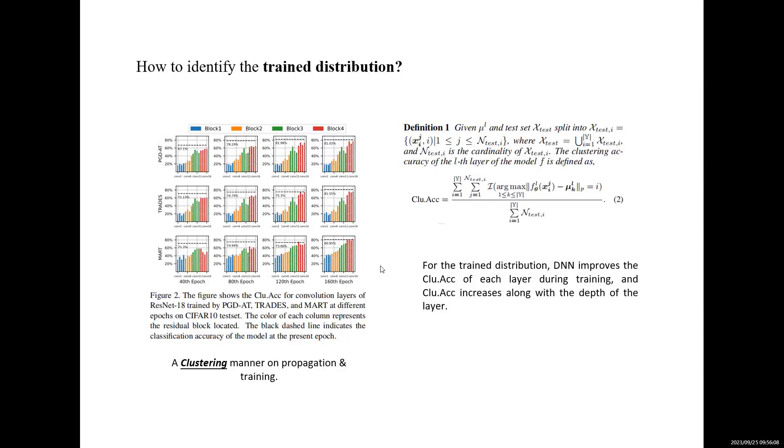By using clean test set samples and examining the middle-layer representations, we found that for trained distributions, deep neural networks improve the defined clustering accuracy as presented in definition 1 of each layer during training. And the clustering accuracy increases along with the depth of the layer.